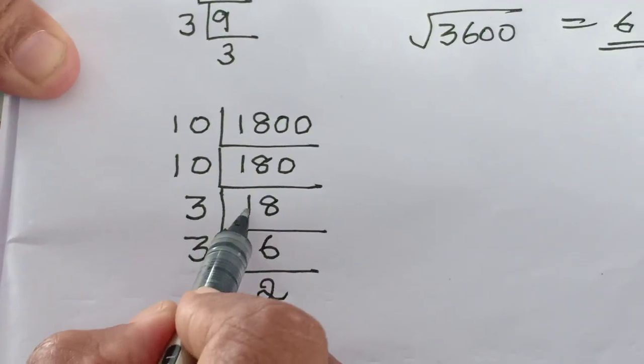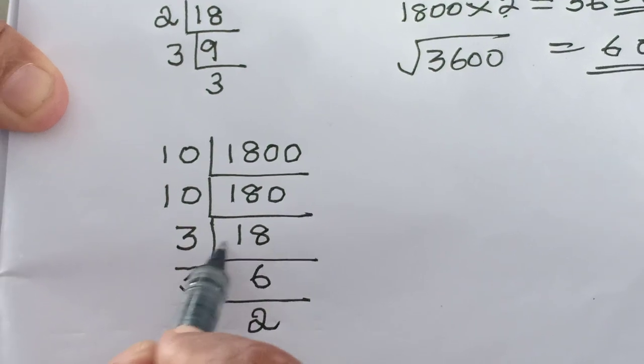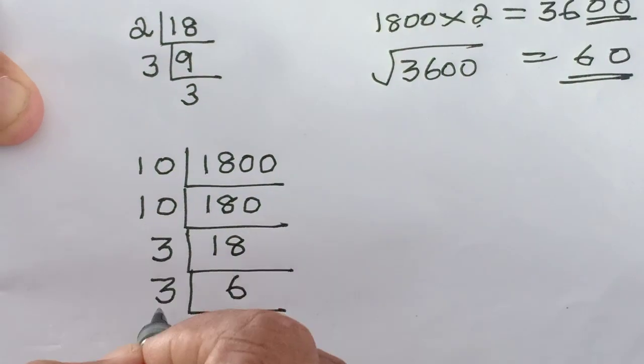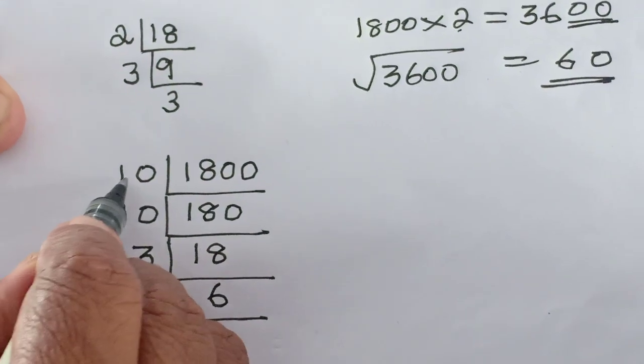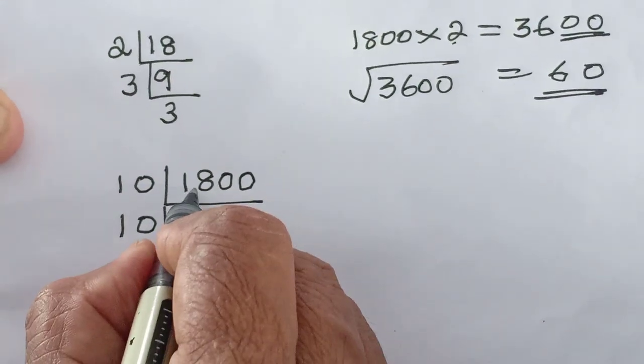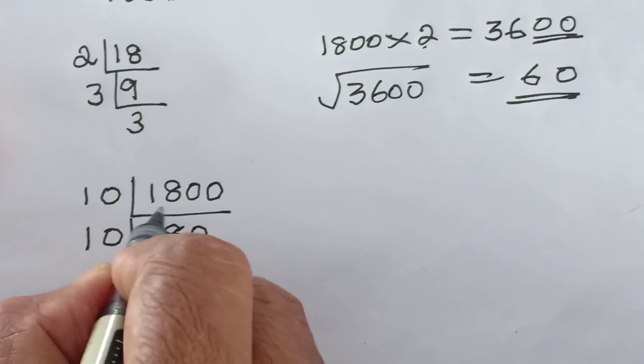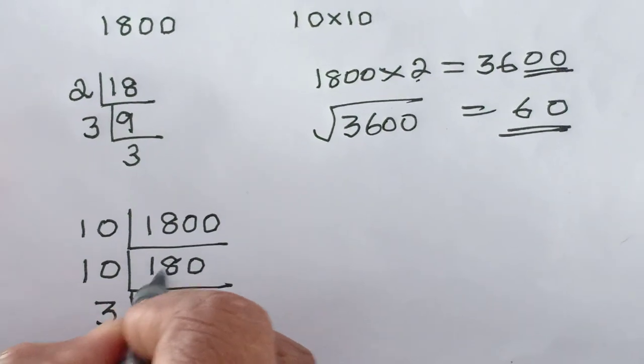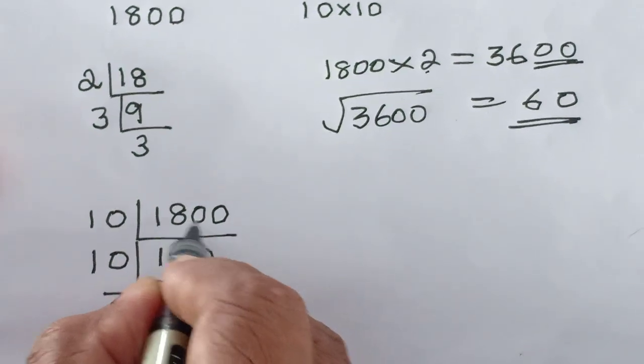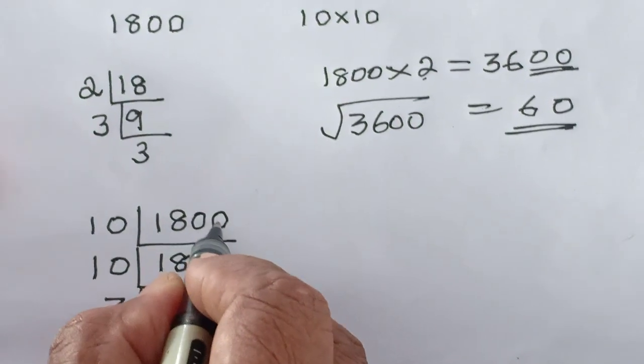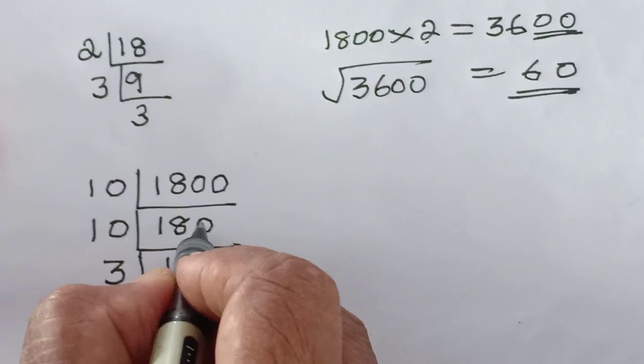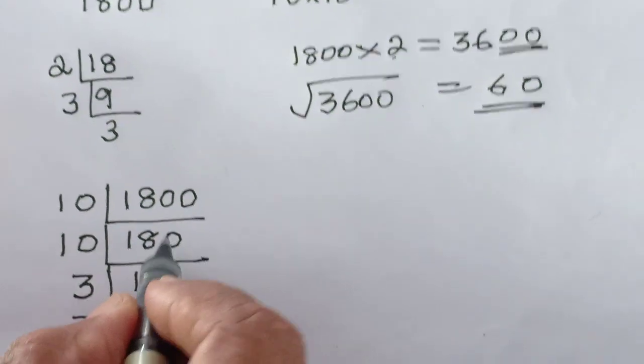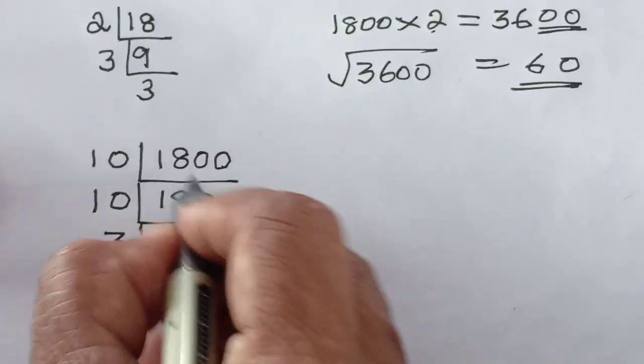2 also you can take. 18 means 1 plus 8 is 9. It comes in 3 tables. So I have chosen 3. The pairs are. Here is the prime number. 18 divided by 10. 10 is 10. Remainder 8. 80. 8 10's are 80. 8 10's are 8. 1 10 is 10. 8 10's are 8.